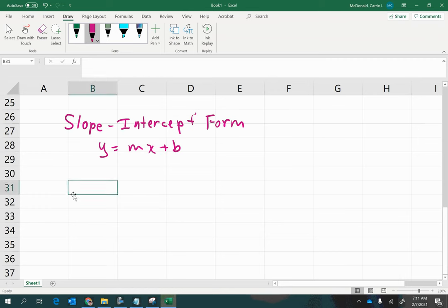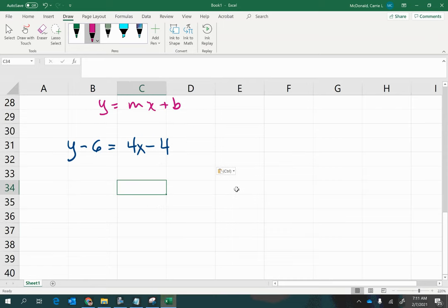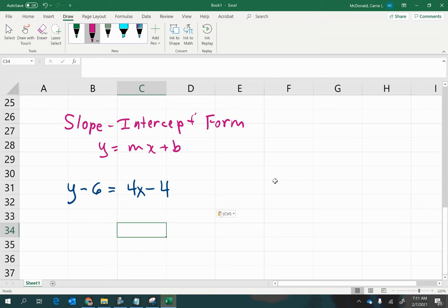So coming from where we left off when we simplified our point-slope form by distributing the 4, now we want to get y alone. So it's very easy for us to just add 6 to both sides here.